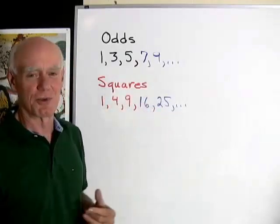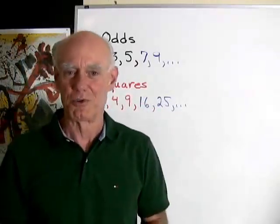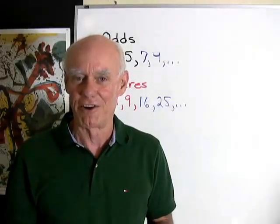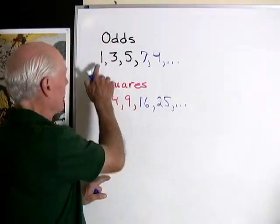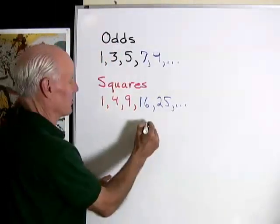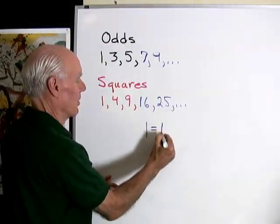So it turns out that there's a relationship between these two sequences, which is something that I find very interesting in mathematics. So I'm going to show it to you. Well, the first odd number and the first square are exactly the same. So I'm going to say 1 is equal to 1.